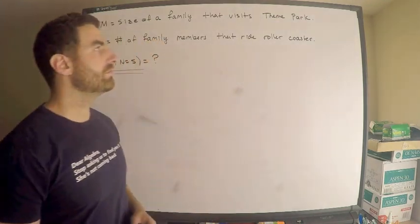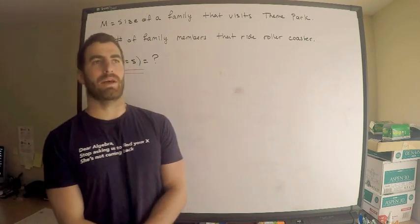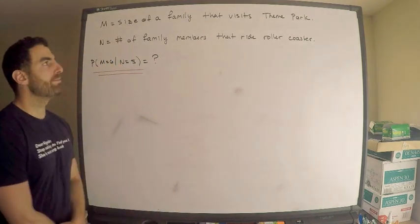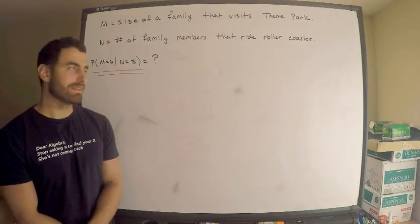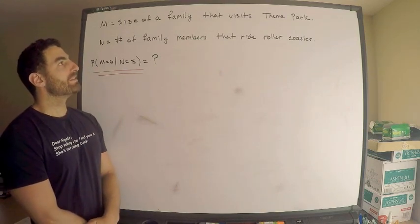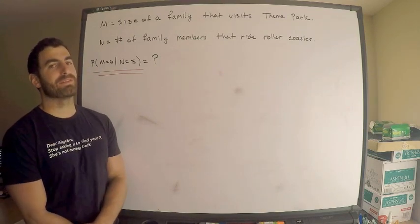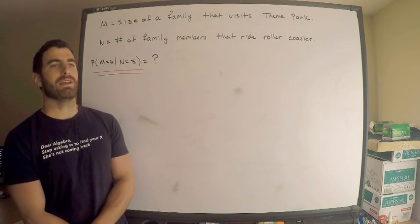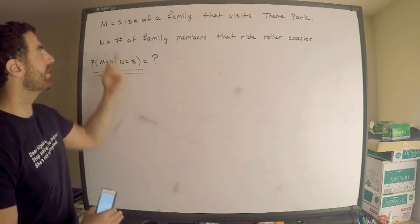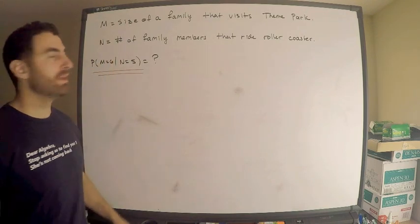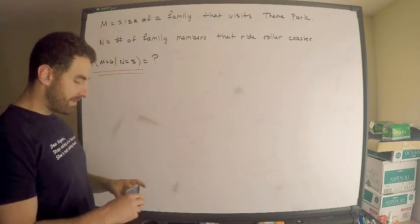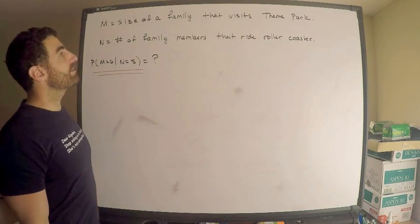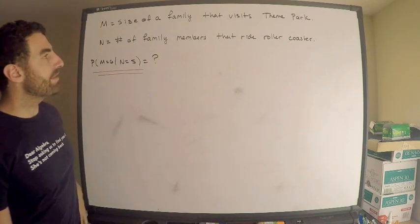I have just a little bit written down. I have two random variables. They basically explicitly give me this information. They tell me that the size we're interested in is the size of a family that visits a theme park, and they give me some little m, so that's why I've labeled it capital M. Capital M is the size of the family that visits the theme park.